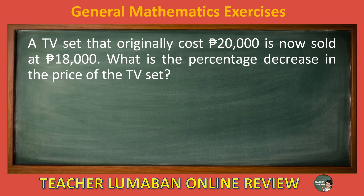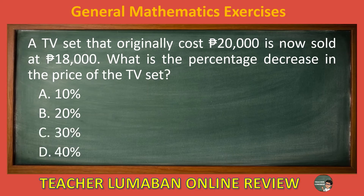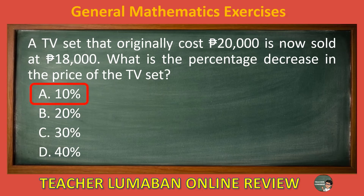A TV set that originally cost 20,000 Philippine pesos is now sold at 18,000 Philippine pesos. What is the percentage decrease in the price of the TV set? Letter A: 10%. Letter B: 20%. Letter C: 30%. Letter D: 40%. The correct answer is letter A: 10%. The percentage decrease in the price of the TV set is 10%.